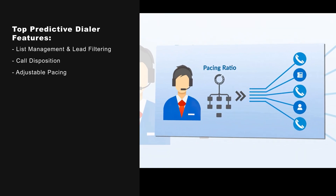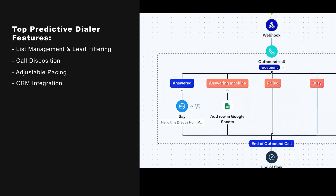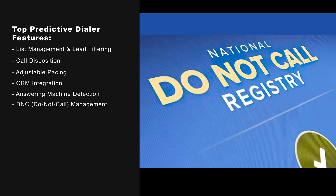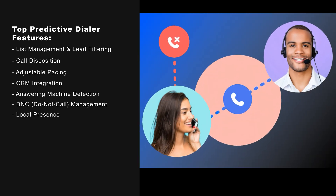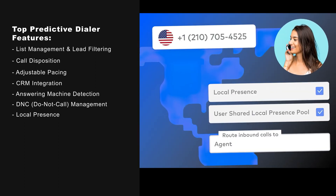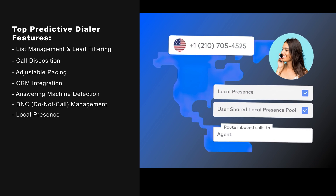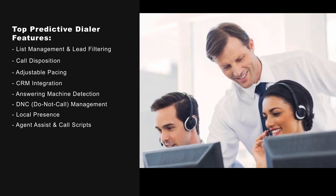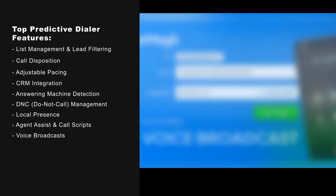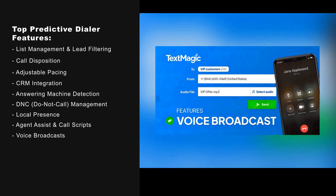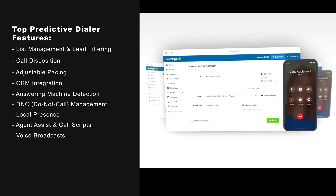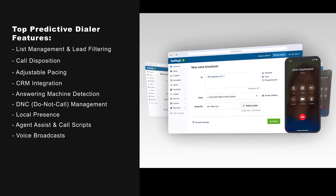Additional features include adjustable pacing, CRM integration, answering machine detection, DNC or do not call management, local presence — which are virtual phone numbers that increase customer trust by matching the area codes where your target markets live — agent assist and call scripts, and voice broadcasts, also known as pre-recorded voicemail message drops, automatically sent out to campaign lists, keeping agents free to focus on personalized calls.